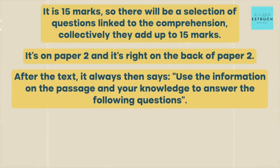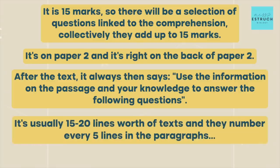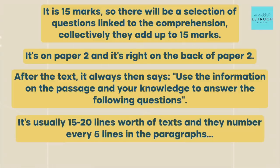It always says 'use the information in the passage and your knowledge to answer the following questions,' so essentially they are all application questions — you're having to use the text and your knowledge to answer them. It's usually 15 to 20 lines of text, and they number every five lines so they can direct you to specific lines for each question.